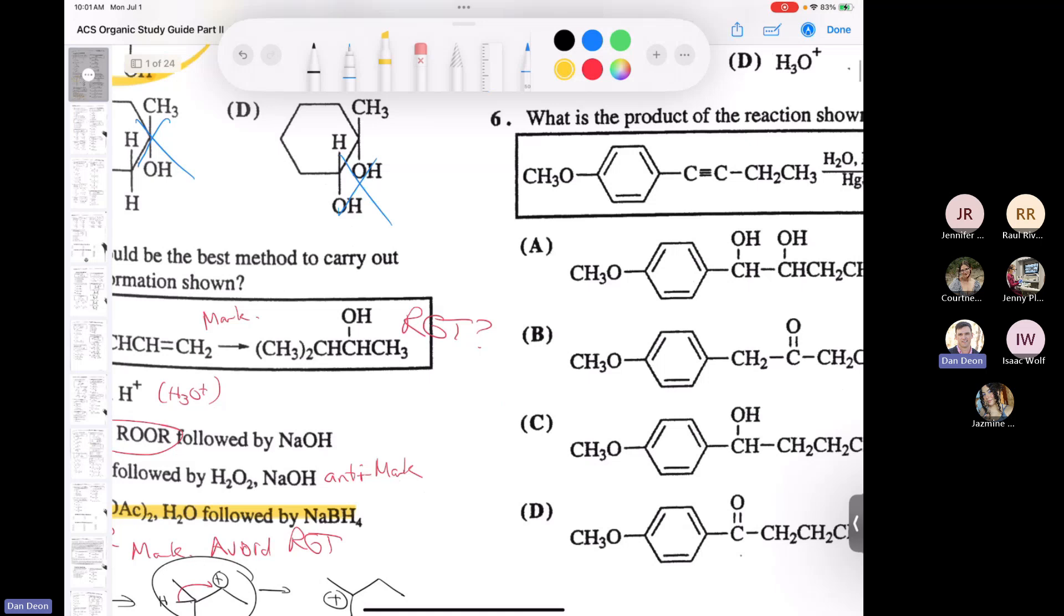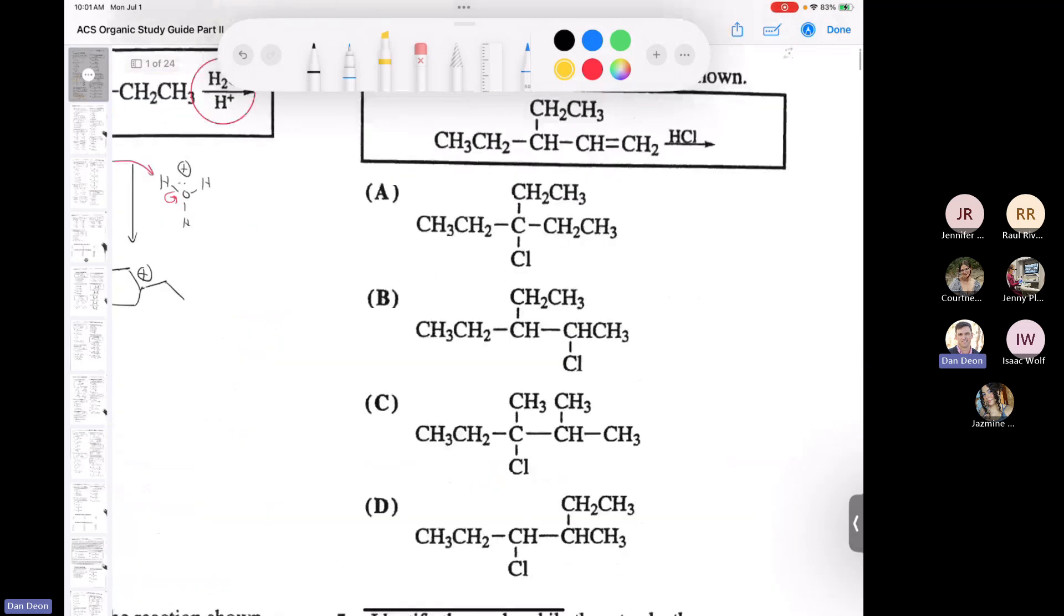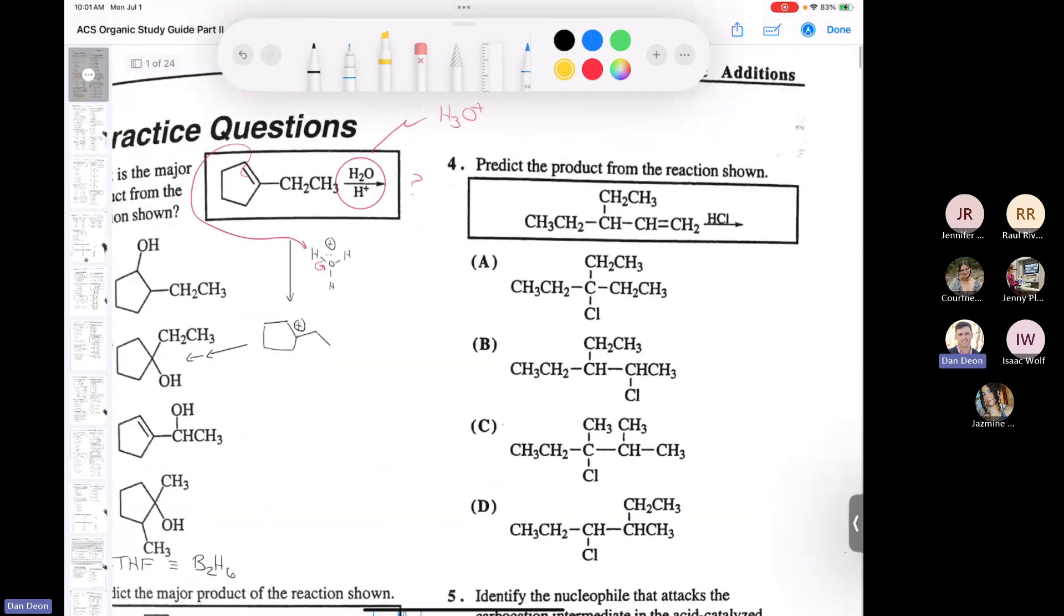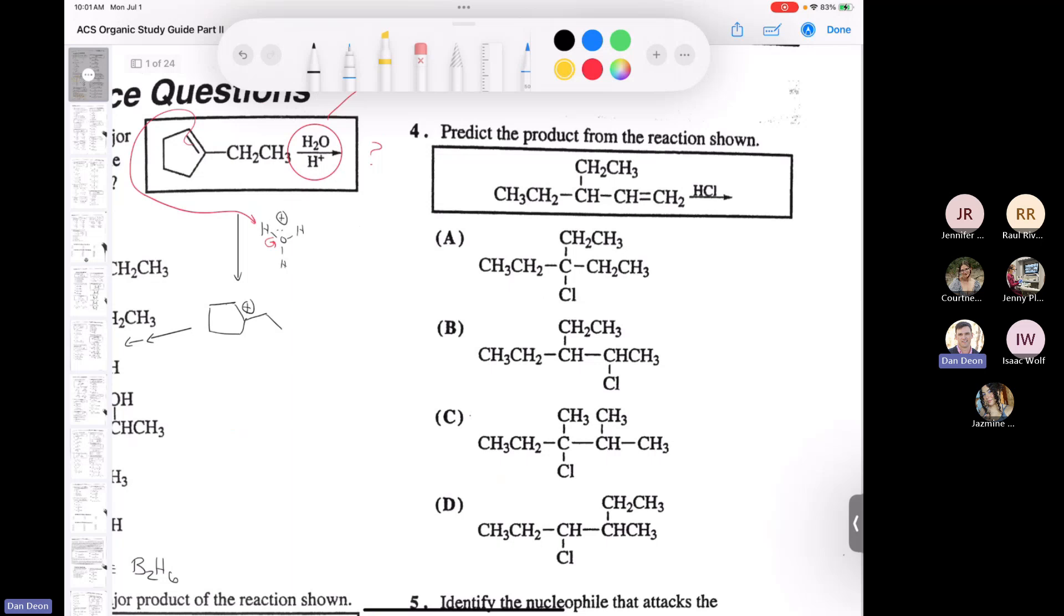All right. Let's try number four. The ACS study guide loves rearrangements, as you can see here. Predict the product of the reaction shown. So remember, this is just an alkene. It's unsymmetrical. I'm doing an addition of HCl. So that's going to proceed with Markovnikov regioselectivity. So that means I'm going to end up with this. So if I put in my ethyl groups, I'm going to end up with this carbocation.